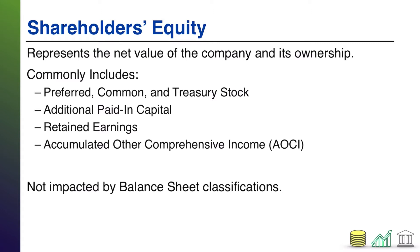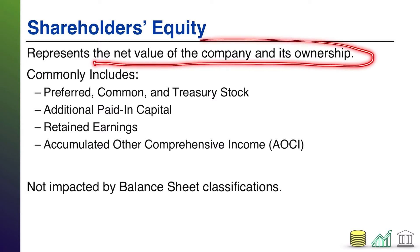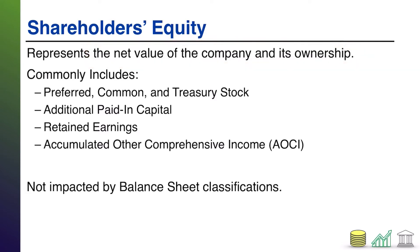There are no subcategories for the shareholders equity section. The shareholders equity section of the balance sheet represents the net value of the company. Remember, A equals L plus SE — assets equals liabilities plus shareholders equity. Or if you rewrite this, SE equals A minus L. The shareholders equity represents what the company owns minus what the company owes to others, or the net value of the company.